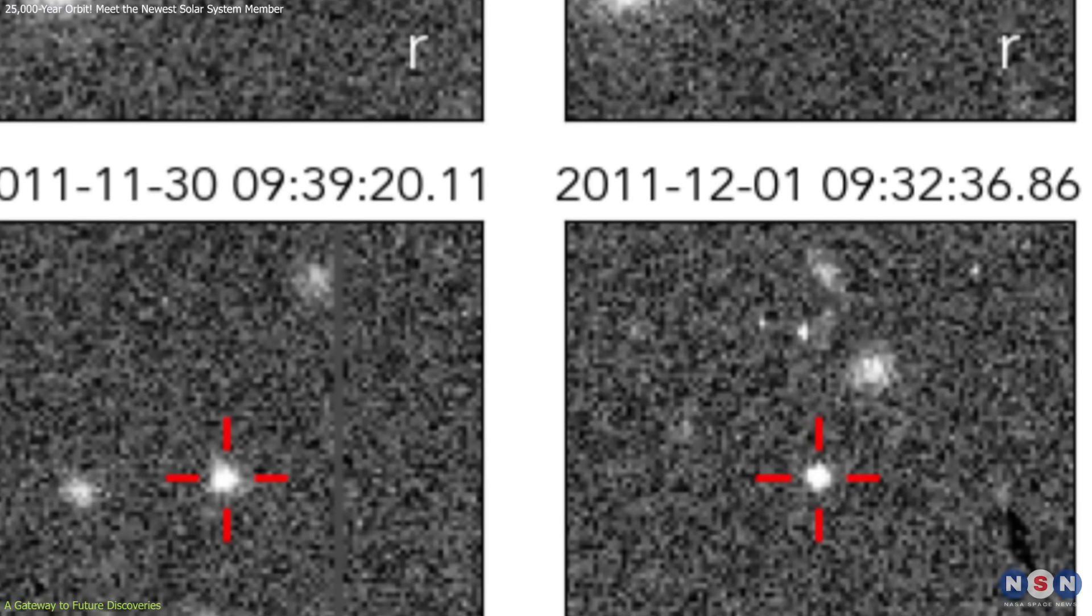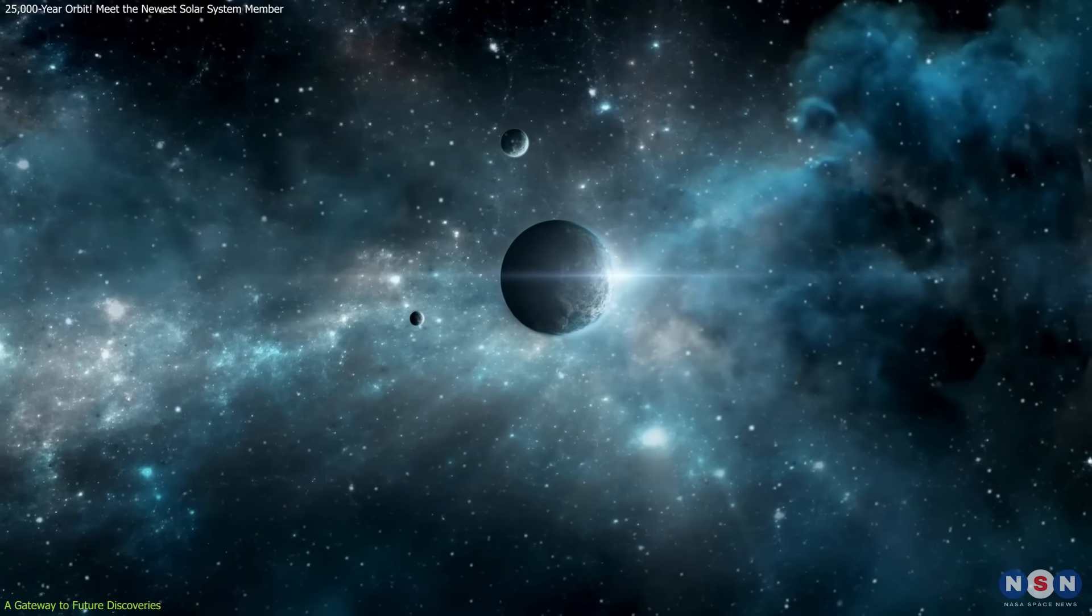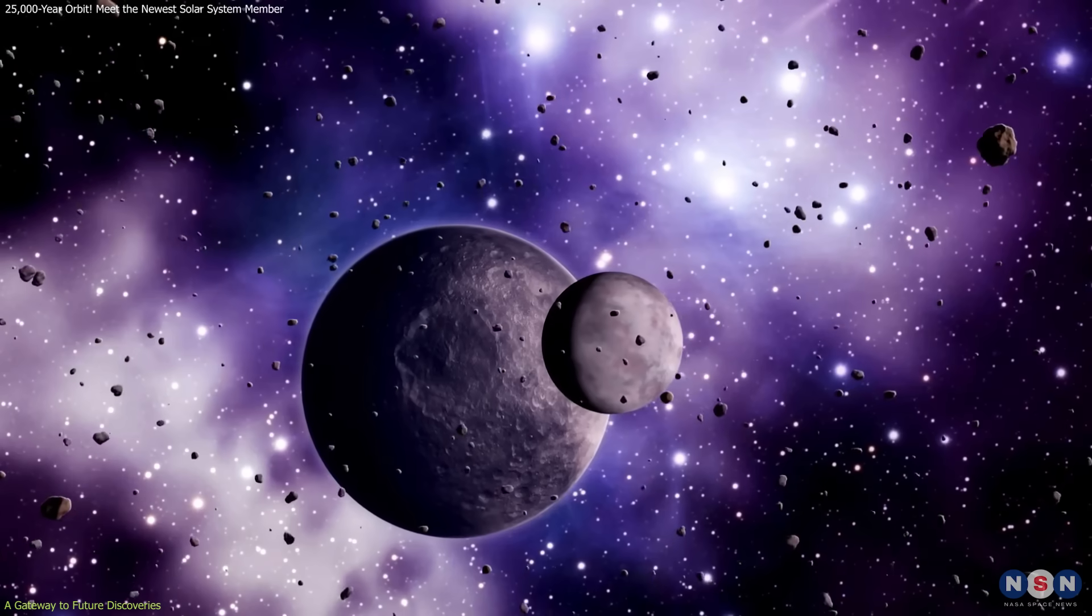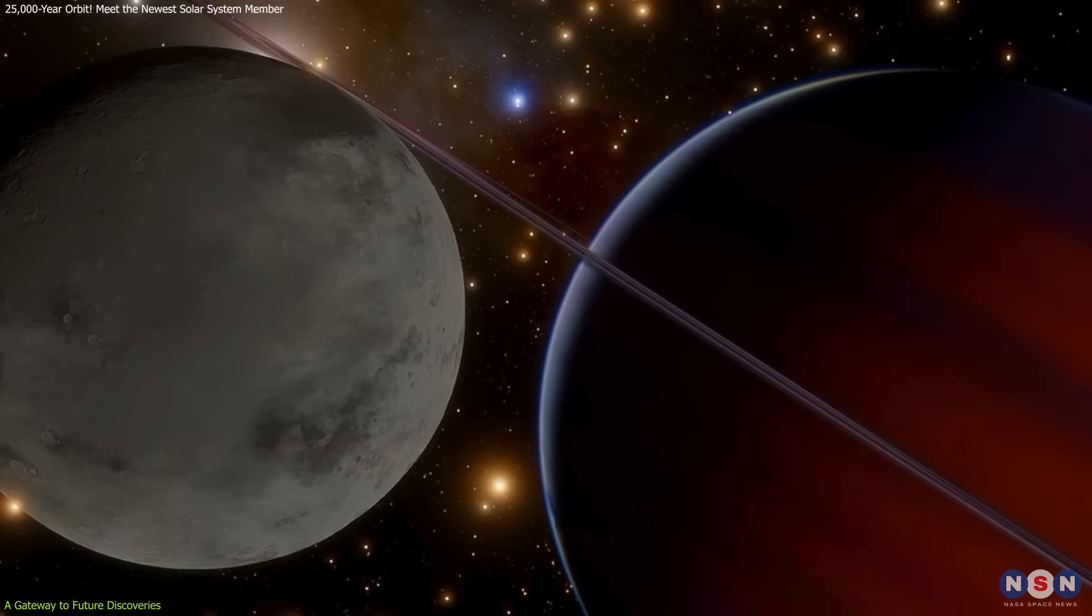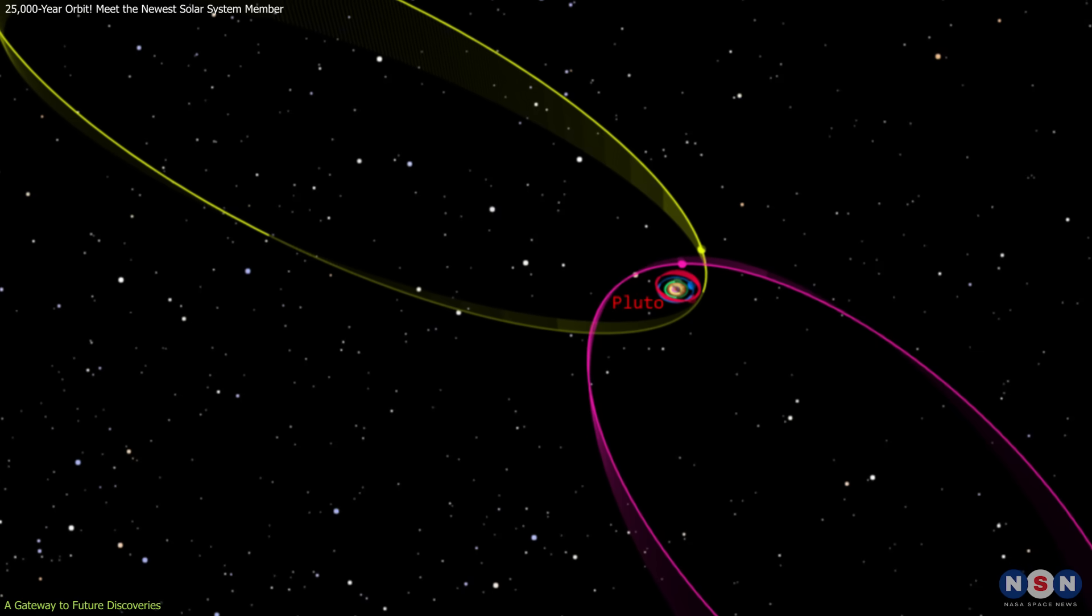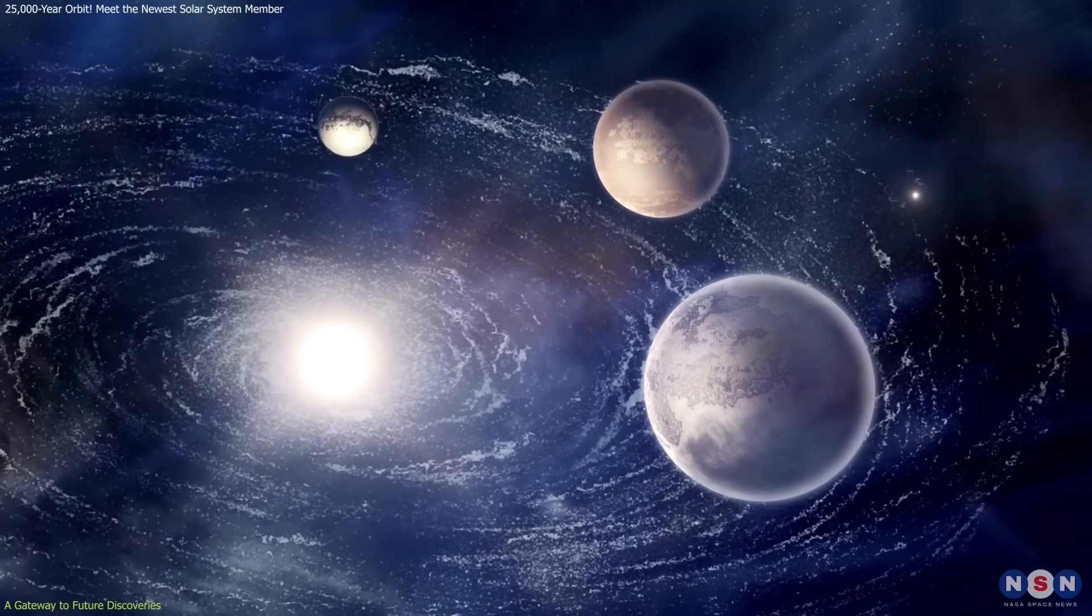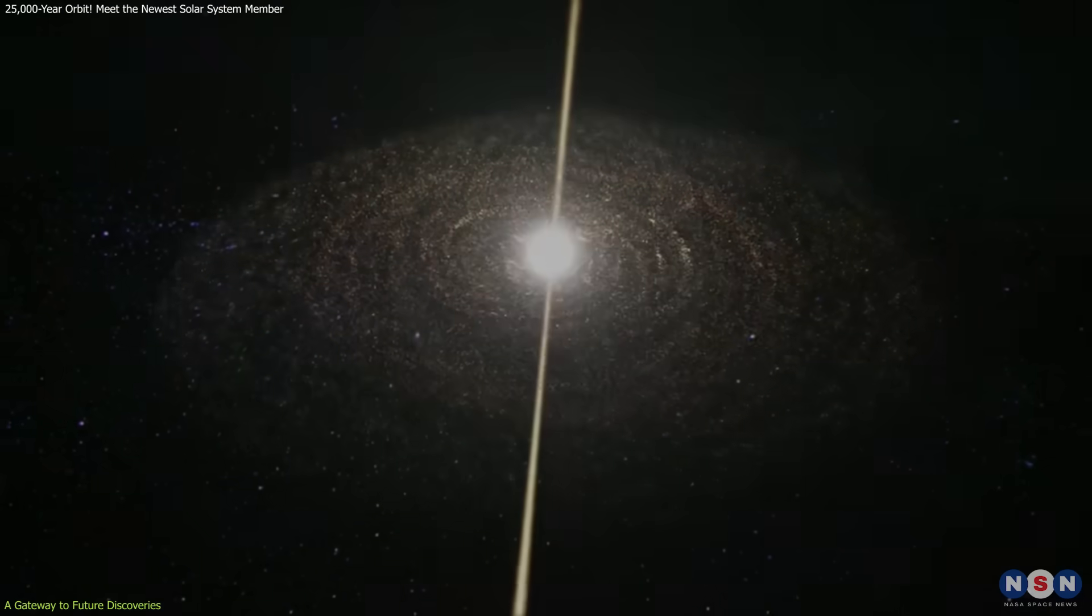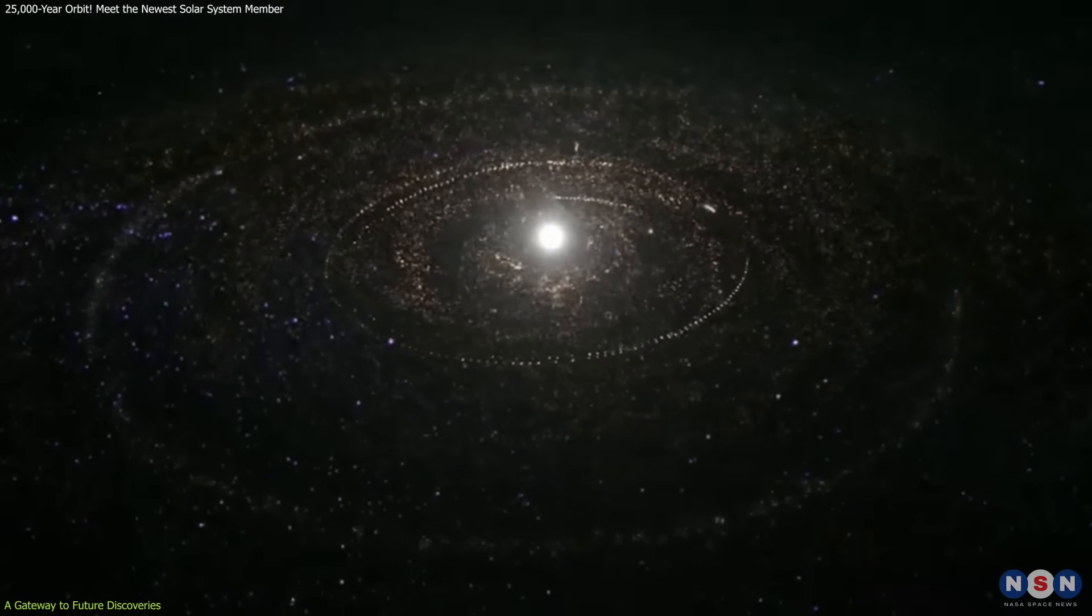This TNO may be just one object, but it represents a vast population of distant worlds waiting to be found. Its discovery suggests that there are likely hundreds, perhaps thousands, of similarly large TNOs with highly elongated orbits that remain undetected. Some could be dwarf planets, others might follow even stranger paths. All of them have the potential to teach us more about the birth and evolution of our solar system.